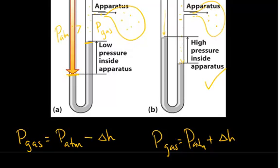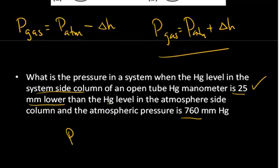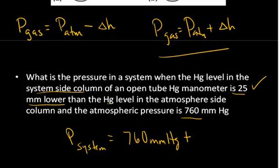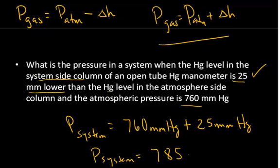That means the pressure of the gas is greater than the atmospheric pressure, so we use the equation: pressure of gas equals atmospheric pressure plus the height difference. That gives us 760 millimeters of mercury plus 25 millimeters of mercury, so the pressure of the gas equals 785 millimeters of mercury, which is the same as 785 torr.